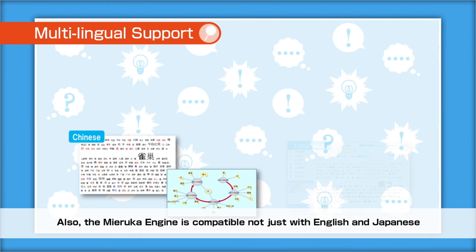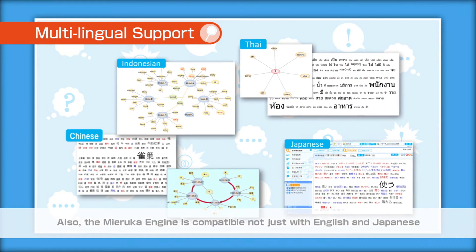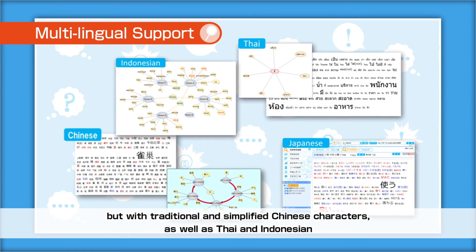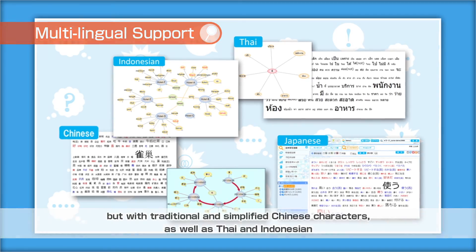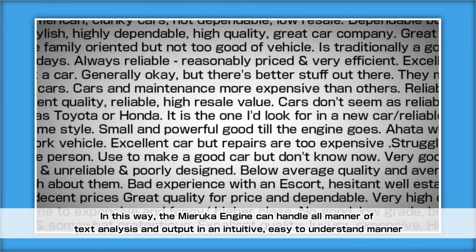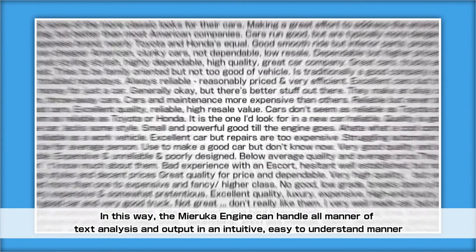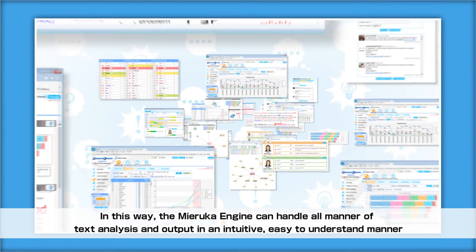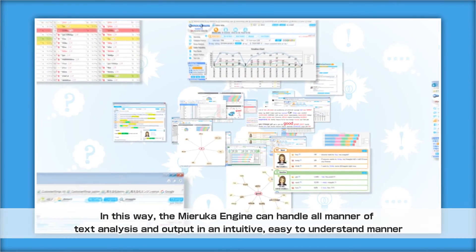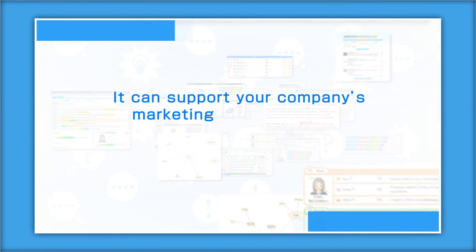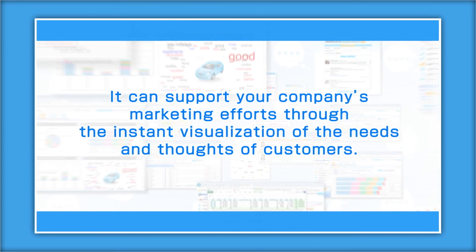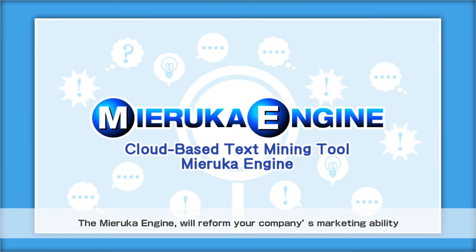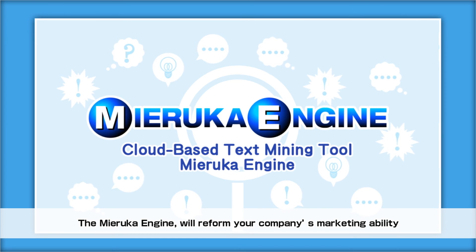Also, the Mierka Engine is compatible not just with English and Japanese, but with traditional and simplified Chinese characters, as well as Thai and Indonesian. In this way, the Mierka Engine can handle all manner of text analysis and output in an intuitive, easy-to-understand manner. It can support your company's marketing efforts through the instant visualization of the needs and thoughts of customers, and will reform your company's marketing ability.